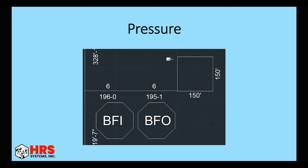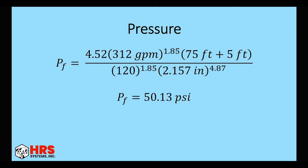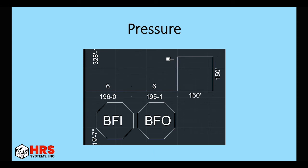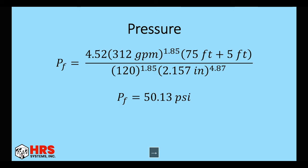And this is our basic floor plan layout. So the building's 150 by 150. So we'll take the 312 GPM. We'll say it's 75 feet for the branch line. So I took the middle of the building and just went to the cross main on one side. Plus 5 feet for the fittings. Our C-factor is 120. Our internal diameter, 2.157. This gives us a pressure loss of 50.13. So you can see here, this is the absolute worst case scenario. It's all of the design area flowing through one branch line. And it's flowing halfway through the branch line. So again, this is worst possible case scenario.